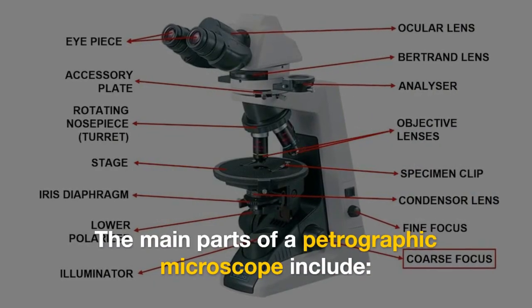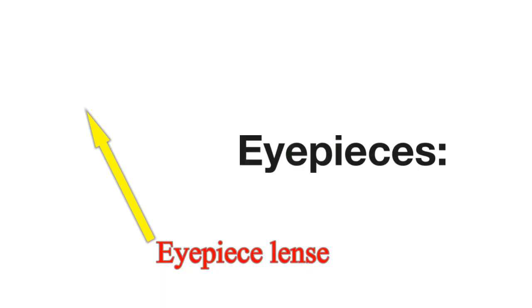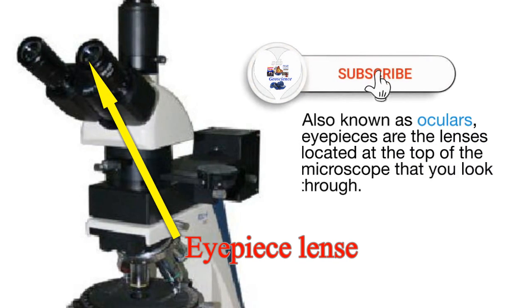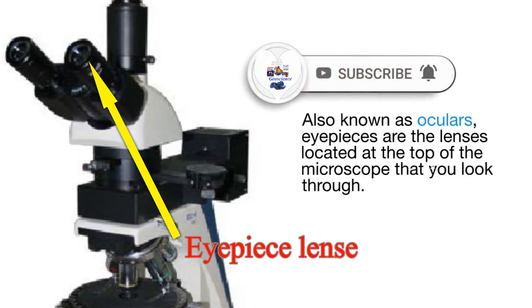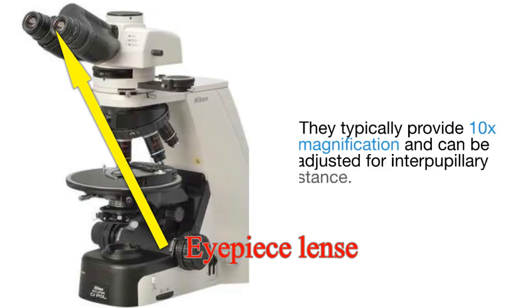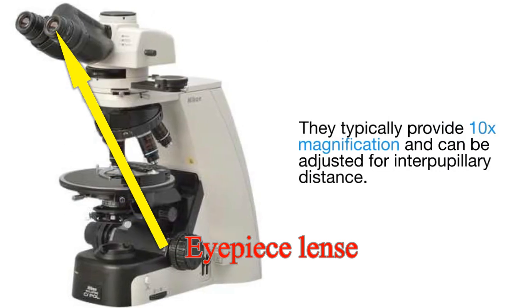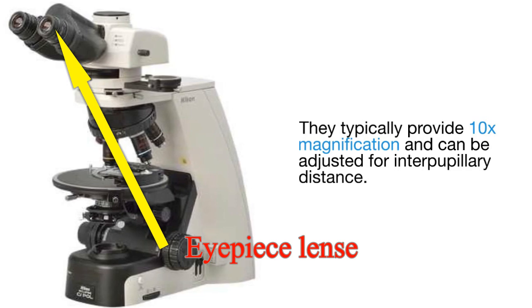The main parts of a petrographic microscope include eyepieces. Also known as oculars, eyepieces are the lenses located at the top of the microscope that you look through. They typically provide 10x magnification and can be adjusted for interpupillary distance.